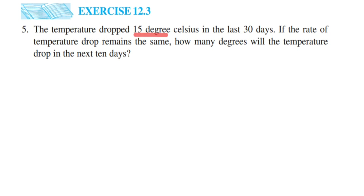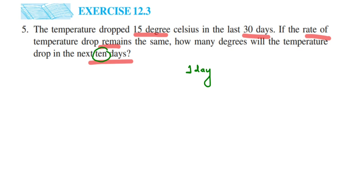In the last 30 days, the temperature has dropped 15 degrees. They have also given that the rate of temperature drop is the same — every day it is dropping the same temperature. We have to find out how much temperature will drop in the next 10 days. To do that, we'll use the unitary method, first finding the drop for one day.